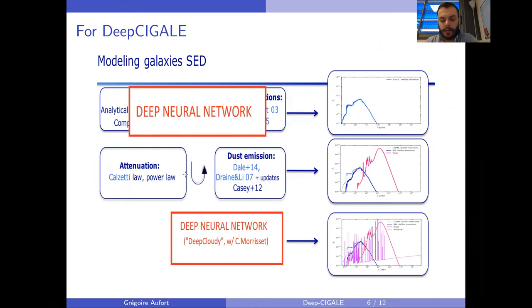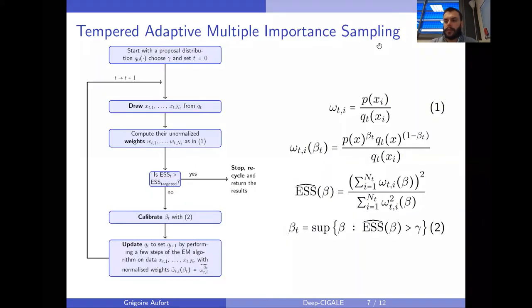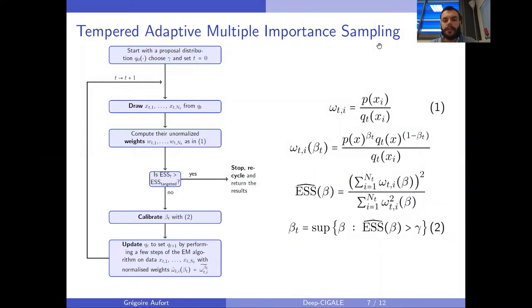Now that we have an efficient way to sample SEDs from the model parameters, we need a Monte Carlo scheme. So we propose to use a modified version of the adaptive multiple importance sampling algorithm.